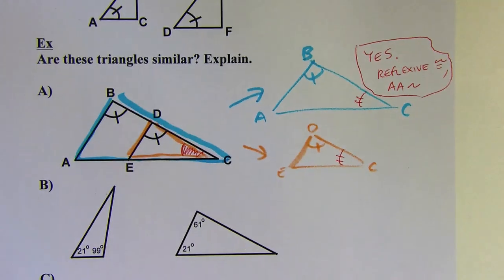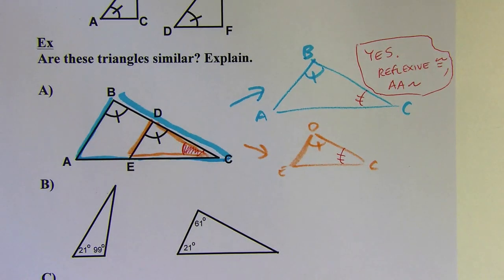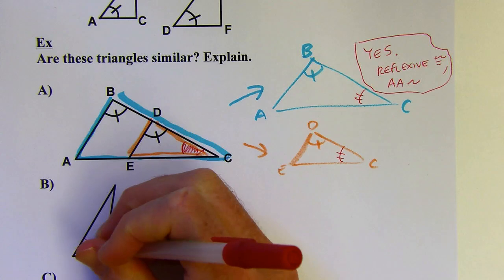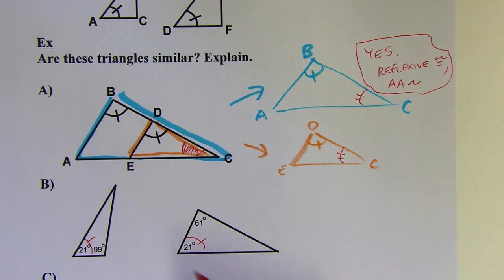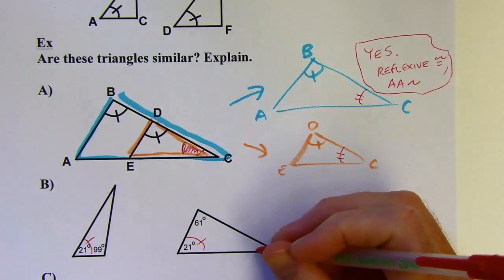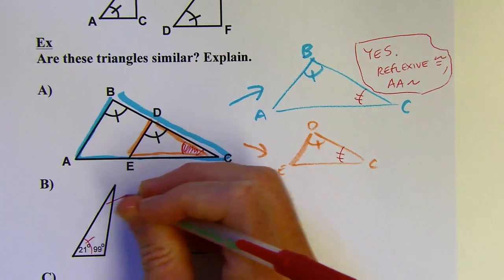Let's try B. Looking at this right off the bat I can see I've got one pair of congruent angles. 61 is not congruent to the 99 degree angle, but I don't want to leave it there because I want to check the missing angles. So let's start with this one here.